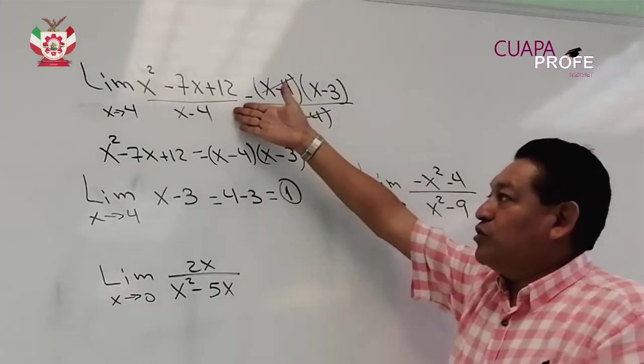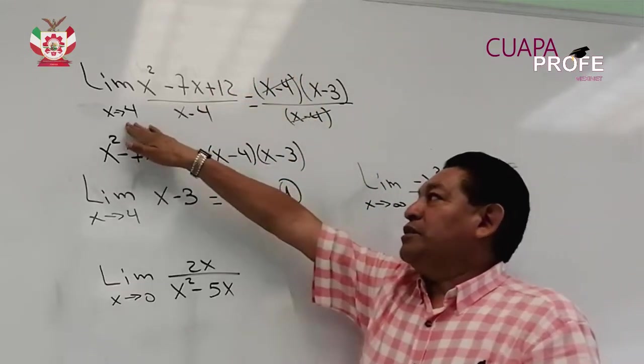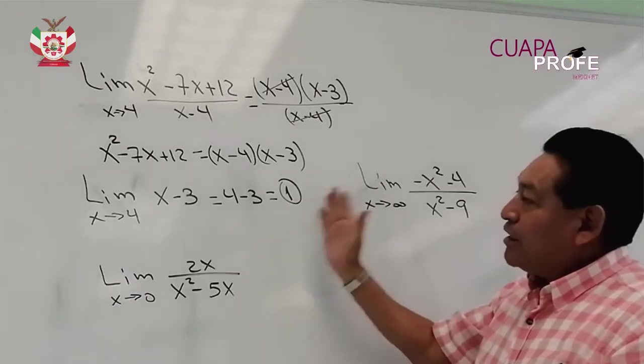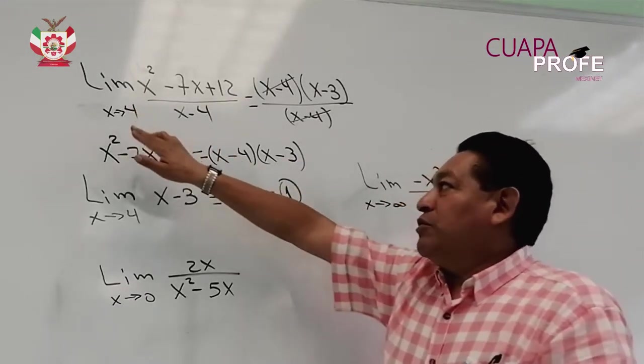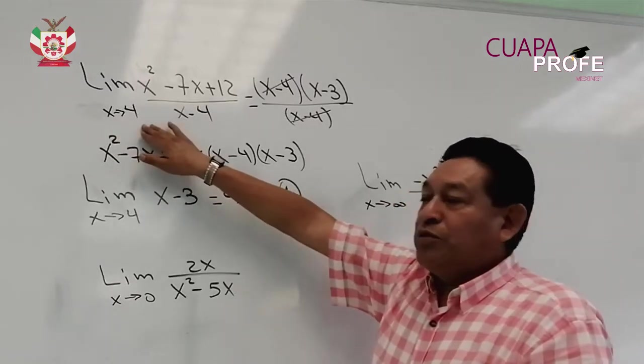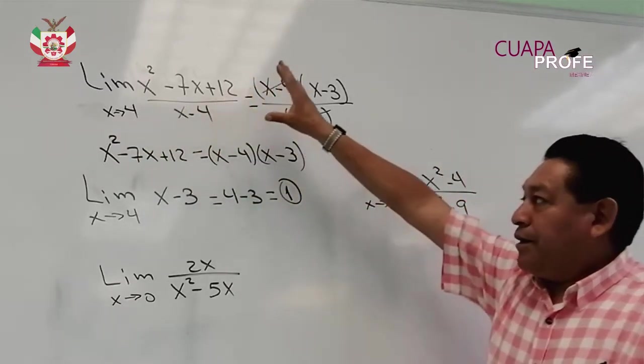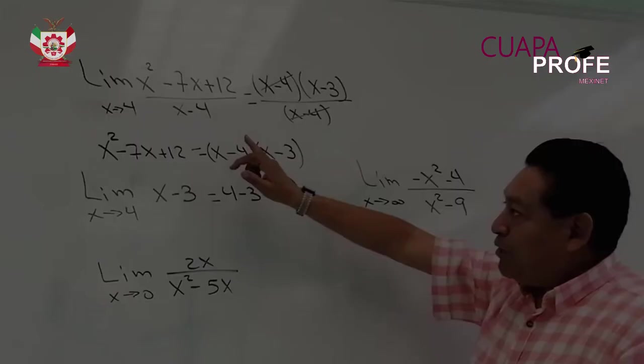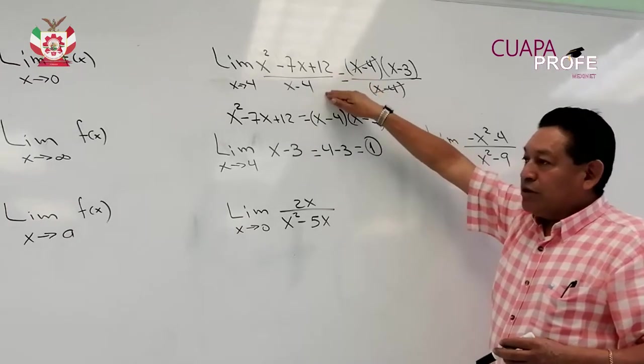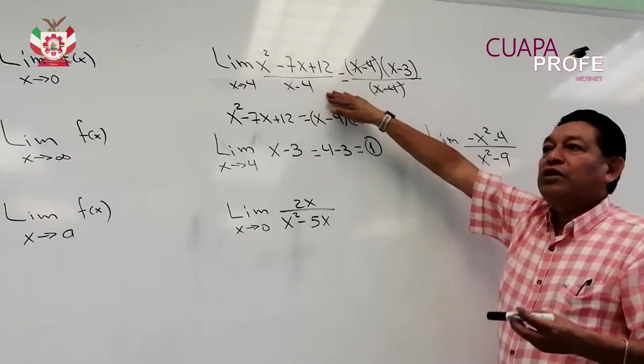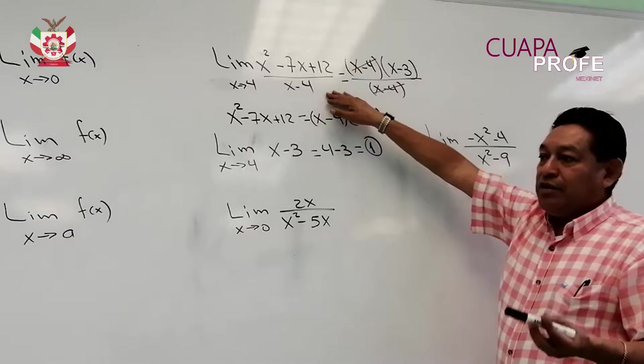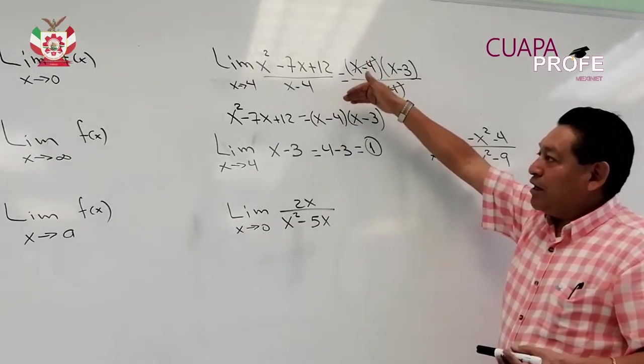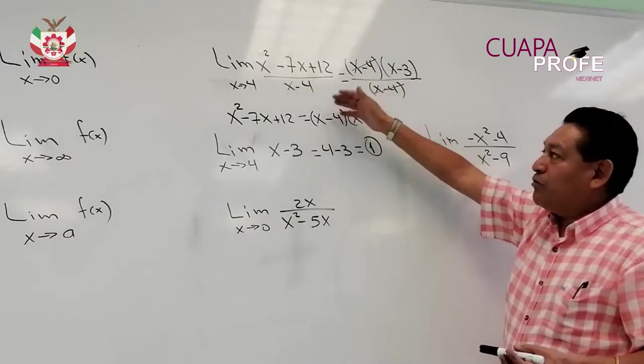Esta función, cuando x tiende a 4, su límite será la unidad. Siempre que tengamos un límite en donde la variable tiende a un número real, la propuesta o sugerencia para poder encontrar dicho límite es primero evaluar la función. Si resulta que nos da una indeterminación o el límite no existe, al dividir entre 0, pues sí tendremos que buscar la manera algebraica de transformar nuestra función.